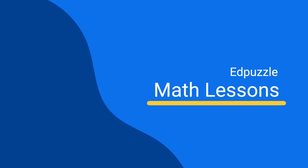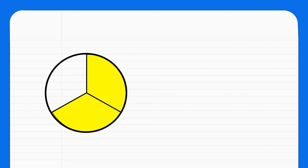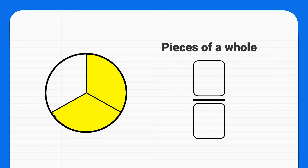Today we are learning how to identify fractions in groups of objects. In this video, I'm hoping you've already watched our introduction to fractions and understand fractions represent pieces or parts of a whole. Fractions are written like this. The numerator, or top number, represents how many pieces we have.